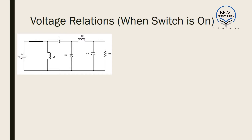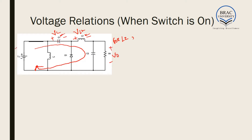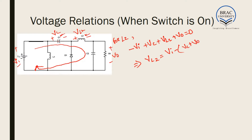Now we consider the second inductor L2. When the switch is on, current flows in this direction, charging the capacitor and inductor. From simple KVL: minus Vi plus Vc plus VL2 plus V_output is equal to 0, giving VL2 is equal to Vi minus Vc minus V_output. We consider this equation number 4.